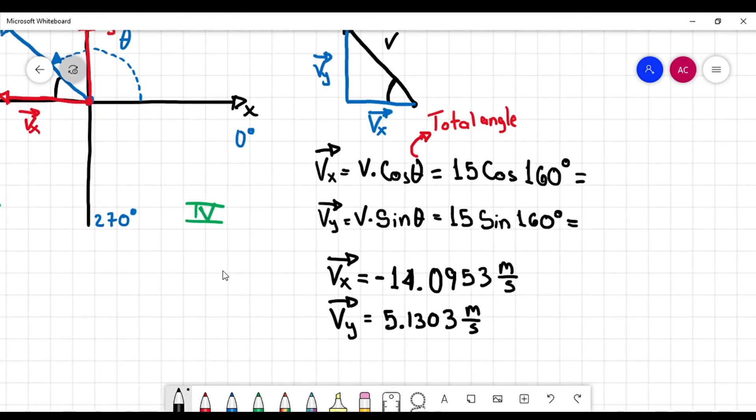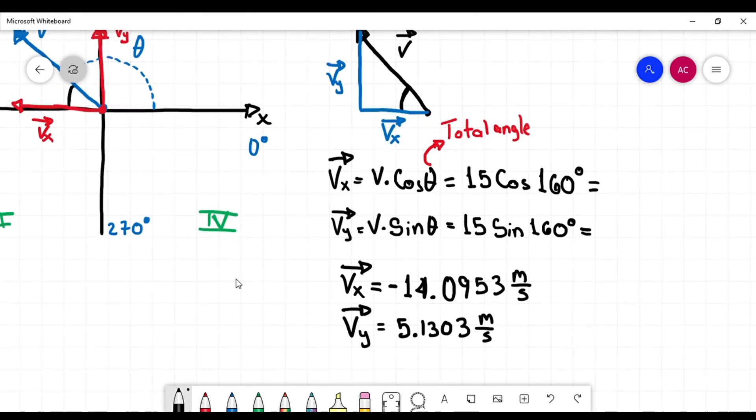But I gotta tell you one important thing. Remember that a vector is a physical quantity that has magnitude and direction. Now you can say that Vx, for example, is just a number. It doesn't have a direction. Yes, it has. The direction is the sign, the sign.